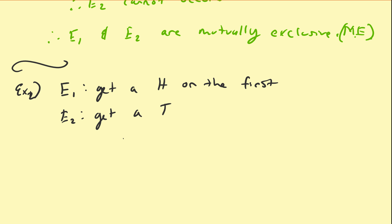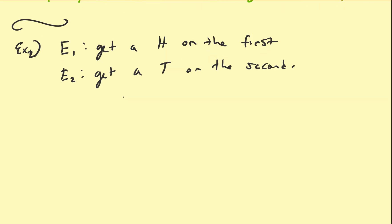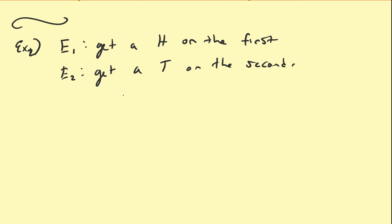So assume that E1 occurs. So coin one is going to be heads. Is it possible that we can get a tails on the second? Yes, it is. So this is possible to occur simultaneously.